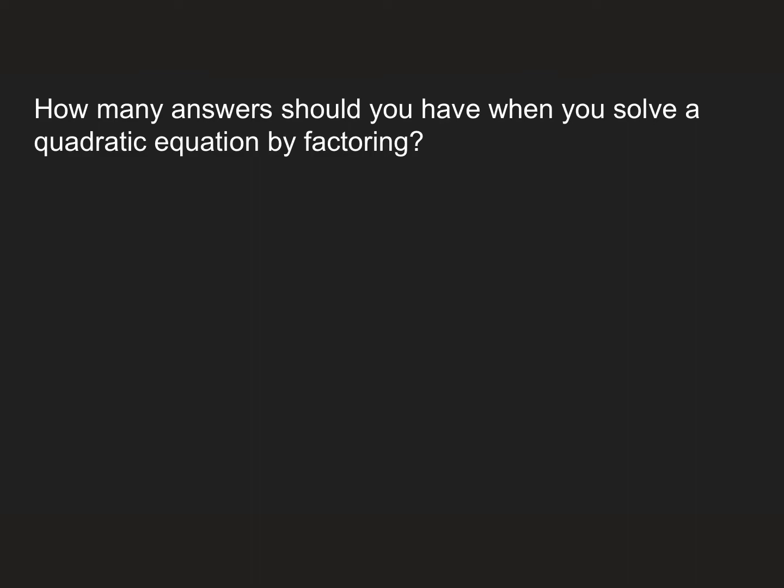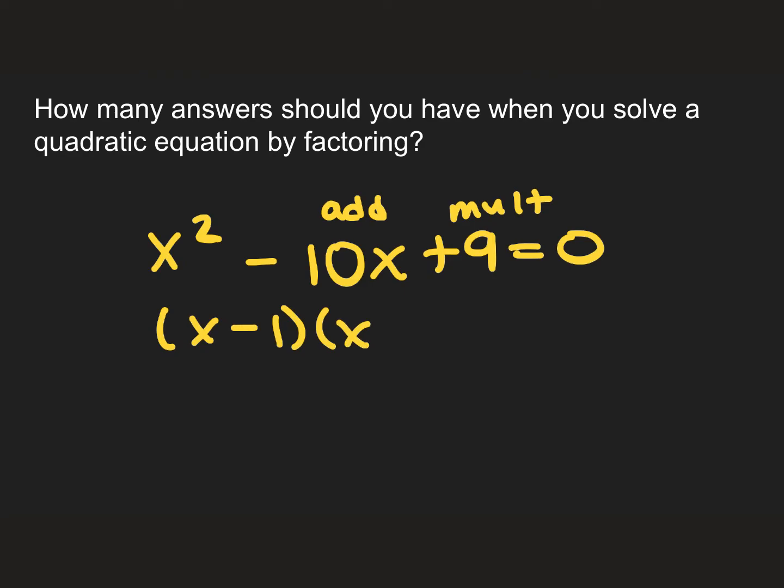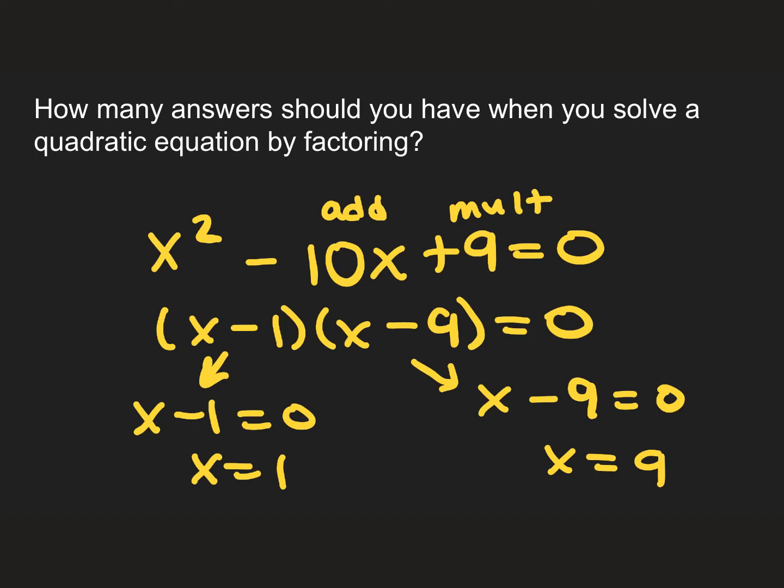The next question says, how many answers should you have when you solve a quadratic equation by factoring? Now if I have a problem such as x² - 10x + 9 = 0, we know we want to have what multiplies to 9 and adds to -10. So if I do that, it will be (x - 1)(x - 9) should equal 0. When we apply the zero product property, I get x - 1 = 0 and x - 9 = 0. This gives us x = 1 and x = 9. Notice here that we have two answers. This is driven by the fact that there is the x², which means that you will always have two answers to your problem.